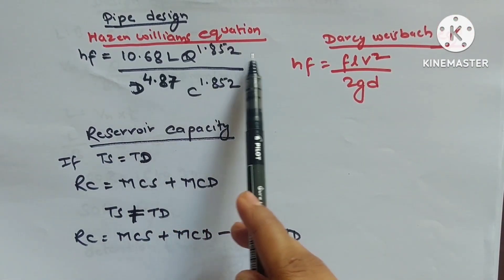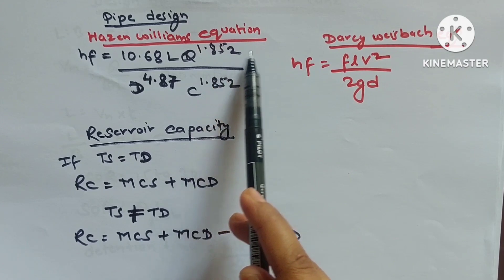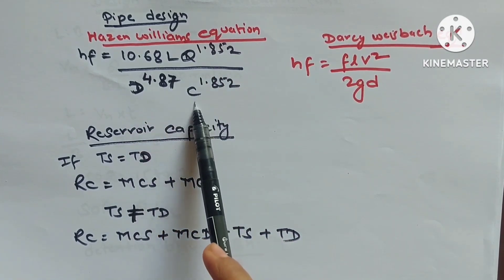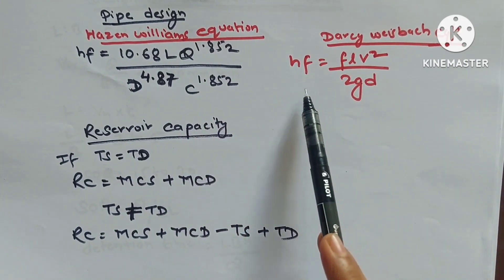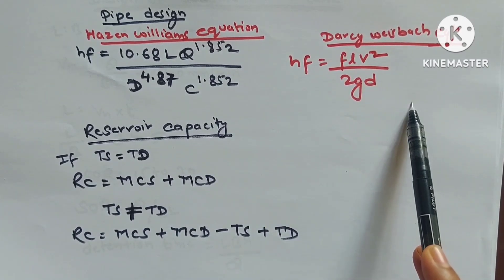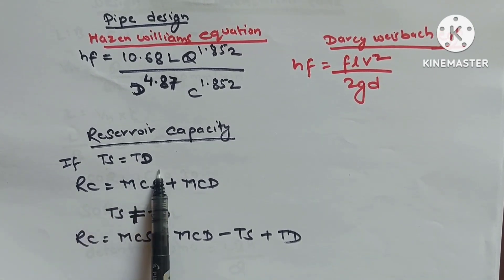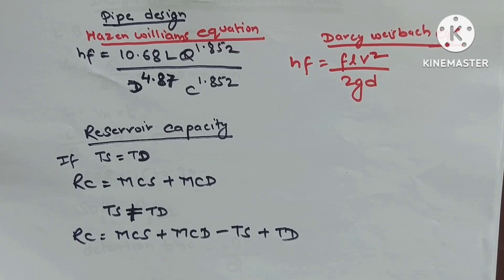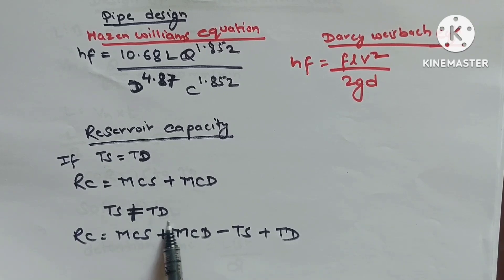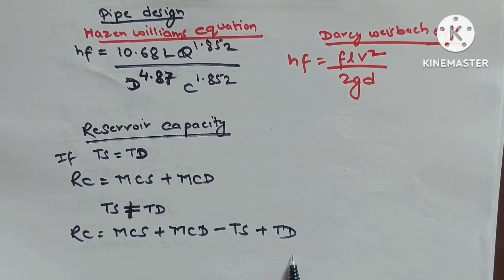Pipe design — Hazen-Williams equation: HF = 10.68LQ^1.852/(D^4.87 × C^1.852). Darcy-Weisbach: HF = fLV²/(2gD). Reservoir capacity: when total supply = total demand, capacity = max cumulative surplus + max cumulative deficit. When they differ, capacity = max cumulative surplus + max cumulative deficit − (total supply + total demand).